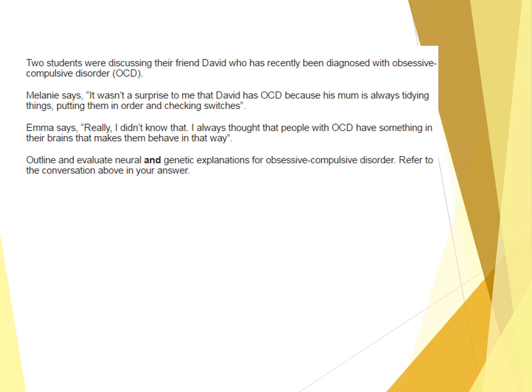Remember this is broken down into AO1, AO2, and AO3. AO1 is worth six marks, AO2 is four marks, and AO3 is six marks — so your AO1 is still worth the same amount and you should write accordingly. For AO1 of neural explanations, cover low levels of serotonin, evidence that low serotonin leads to OCD symptoms, the basal ganglia system, and damage failing to suppress minor worries, alerting the thalamus.